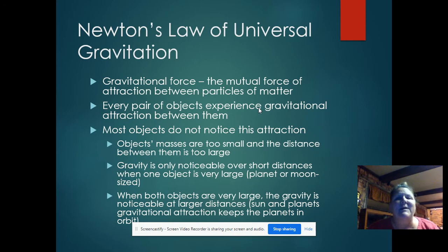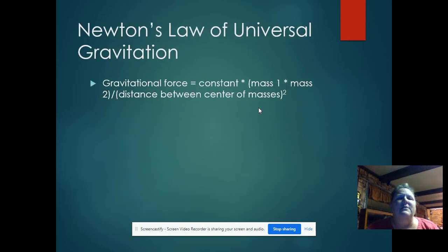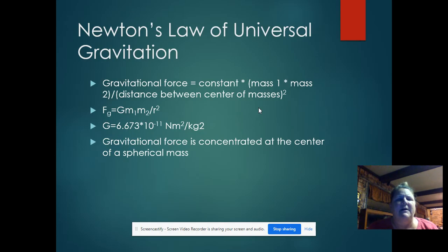So how do we calculate this? Newton's Law of Universal Gravitation. Now, gravitational force is equal to a constant, which Newton came up with, mass of the first object times the mass of the second object divided by the distance between the centers of both objects squared.